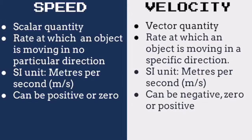This is where they differ. Speed can only be zero or greater than zero — it cannot be negative. However, unlike speed, velocity can also be negative. This means that velocity can be zero, greater than zero, or smaller than zero.